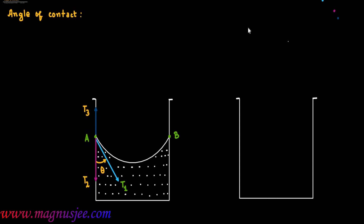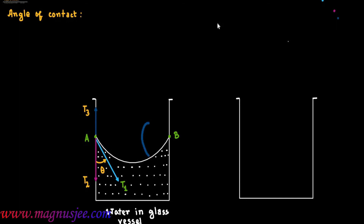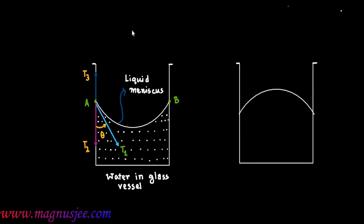Water is placed in a glass container, meaning it is a liquid which wets the wall of the container. The free surface of the liquid is called the liquid meniscus. Water is a liquid which wets the solid wall of the container. On the right-hand side, we have another vessel where a liquid is placed which does not wet the wall — that means mercury is placed in a glass vessel.